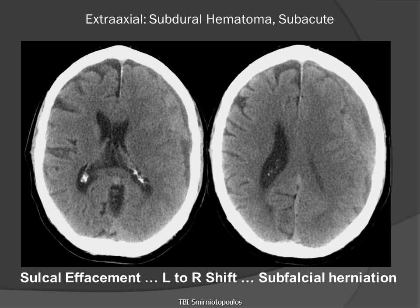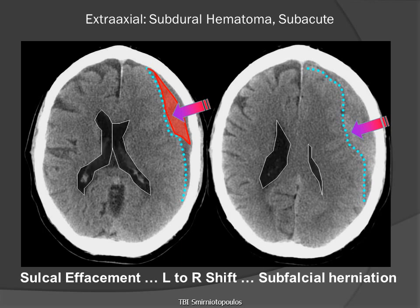If we look at this pair of axial cross-sectional CT images without contrast, we notice immediately an asymmetry in the size of the cerebral sulci, which appear to be effaced over the patient's left hemisphere. There is also an extra-axial collection that is almost isoattenuating to the underlying gray matter. We can see the interface between the extra-axial subacute subdural hematoma and the underlying brain. The hematoma is pressing on the brain, but because of the pre-existing enlargement of the subarachnoid space, there is relatively little displacement and shift of the ventricles.